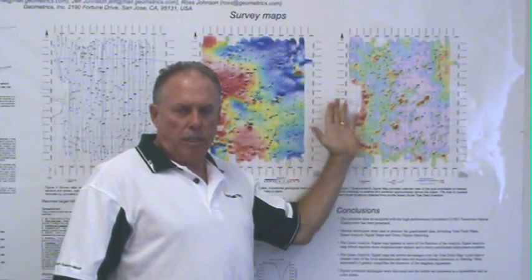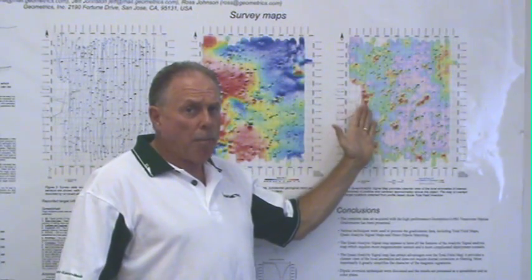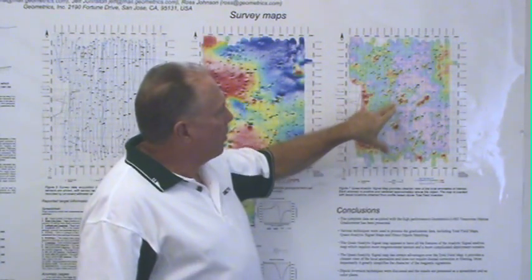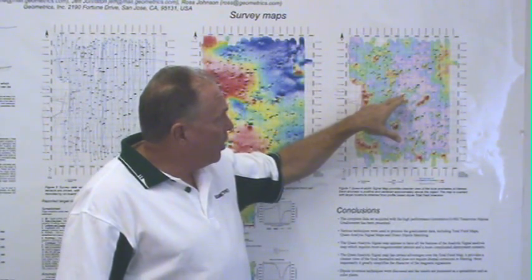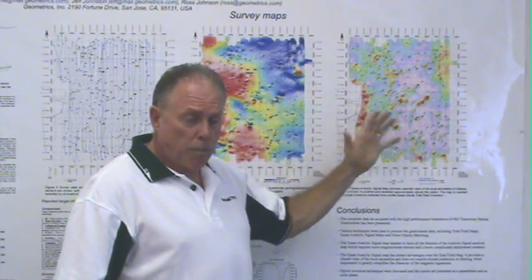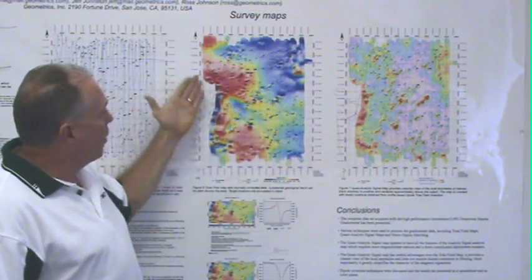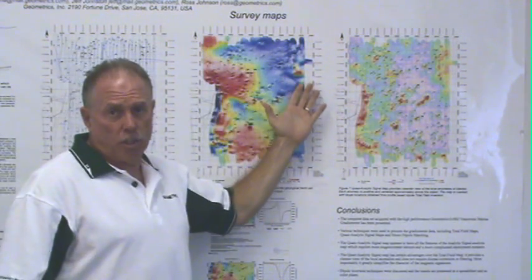When we plot the quasi-analytic signal in a map form, we see that each anomaly is positive and its location is more easily discernible as compared to a total field map.